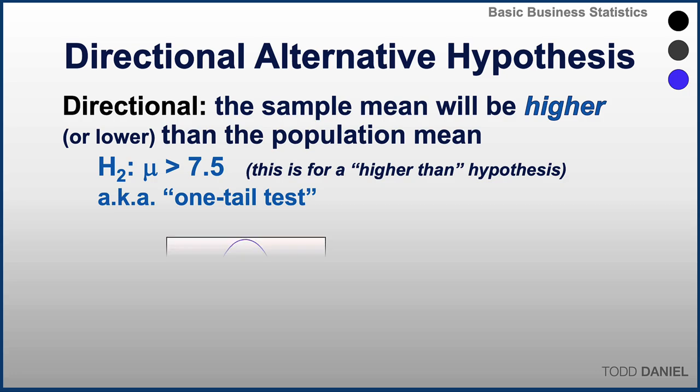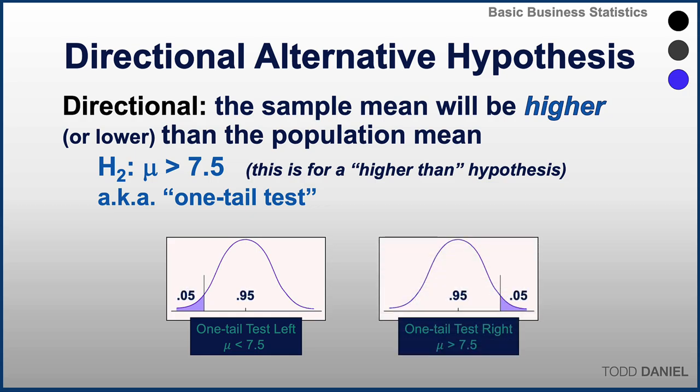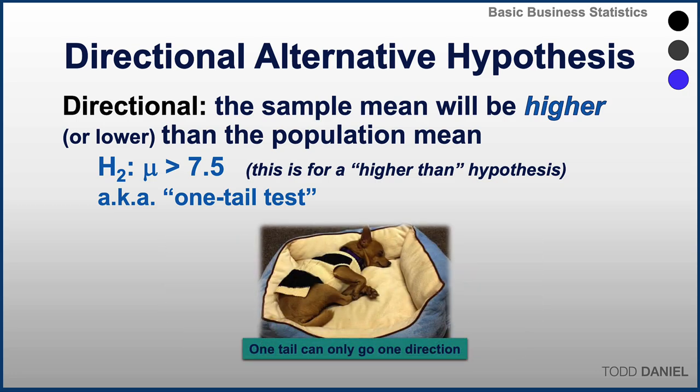We could be interested in scores that are decreasing, in which case we would be doing a one-tailed test to the left. We would specify mu less than 7.5. Or we could do a one-tailed test to the right, in which case we would specify our alternative hypothesis as mu greater than 7.5. But regardless, if we are doing a one-tailed test, we are interested in only one tail of the distribution.